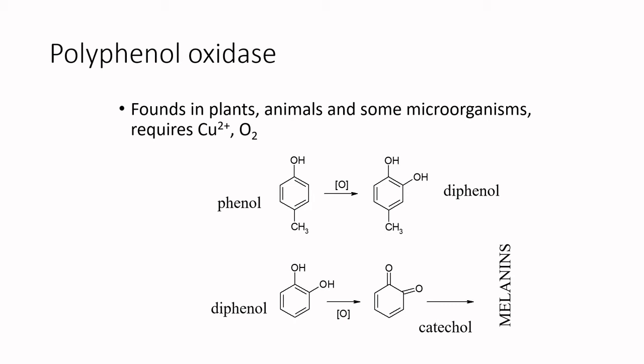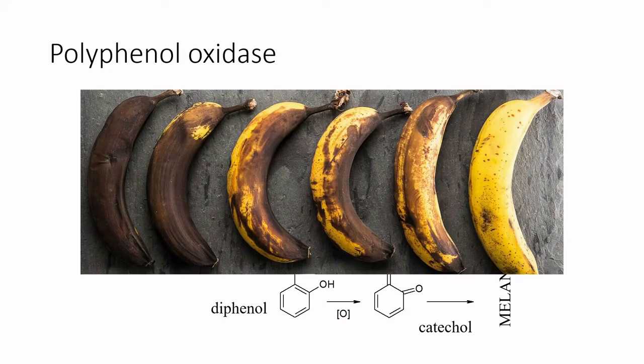Let's jump into some enzymes. There are literally hundreds if not thousands of food enzymes, but some get a lot of play. Polyphenol oxidase is one where in many cases we want to get rid of it. Polyphenol oxidase is found in lots of plants and causes the browning we see in fruits and vegetables — if you've had a banana that's gone brown, it's because of polyphenol oxidase. Using polyphenol oxidase plus copper and oxygen, you form melanin-type products or brown pigments.